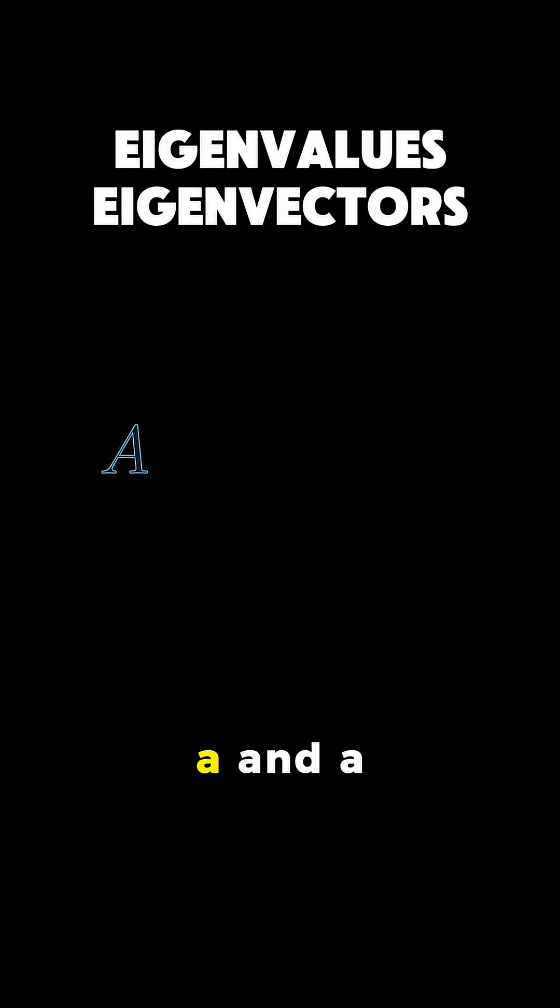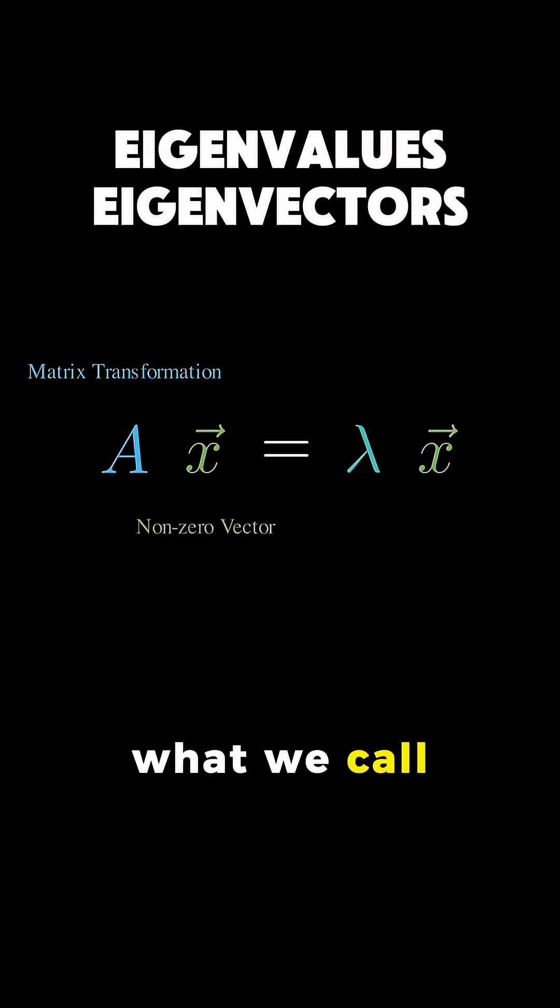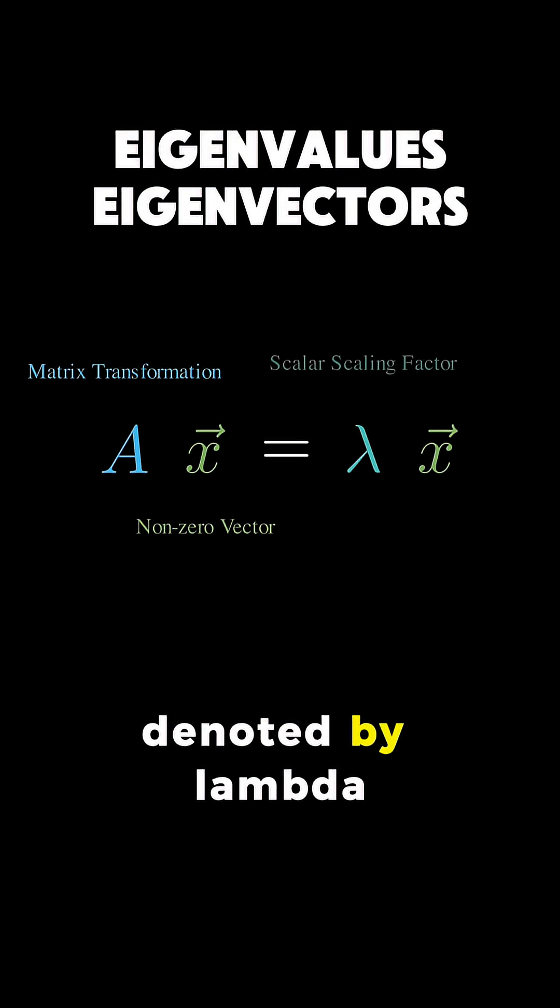If we have a square matrix A and a non-zero vector x, we say that x is an eigenvector if multiplying A by x results in a scalar multiple of x. That scalar is what we call the eigenvalue, denoted by lambda.